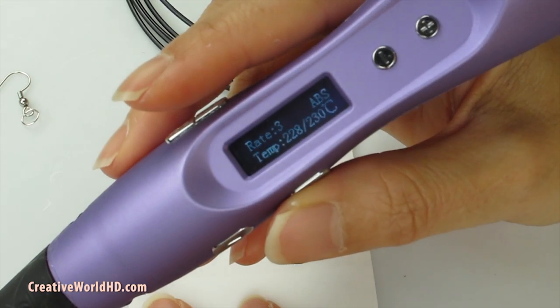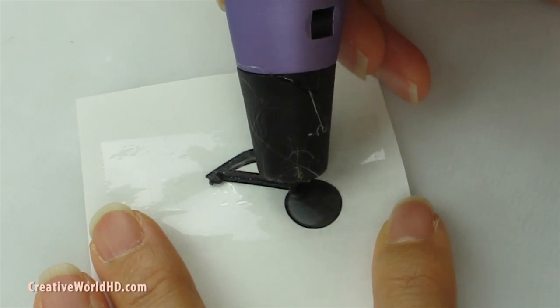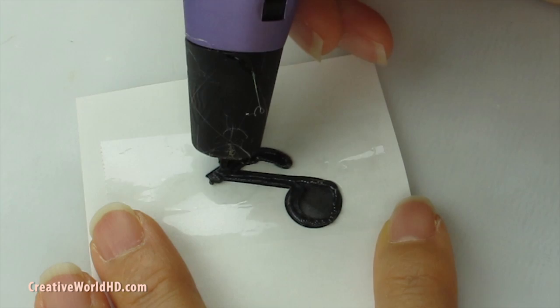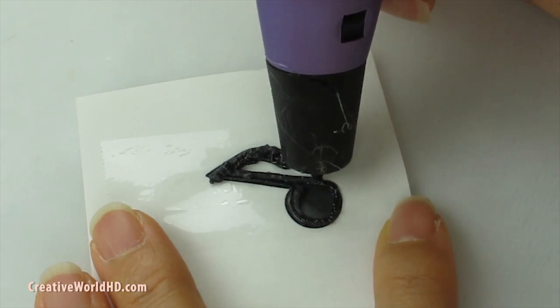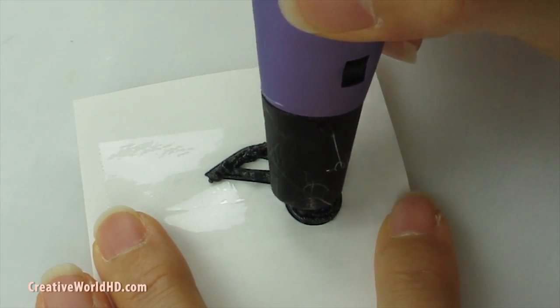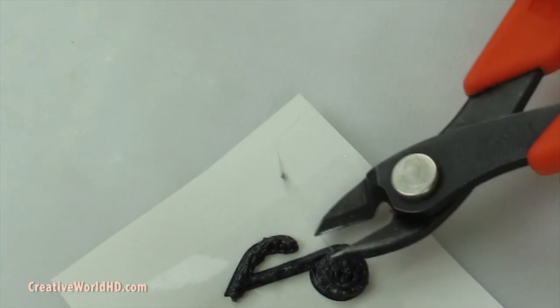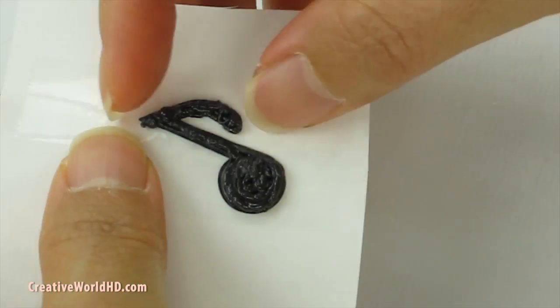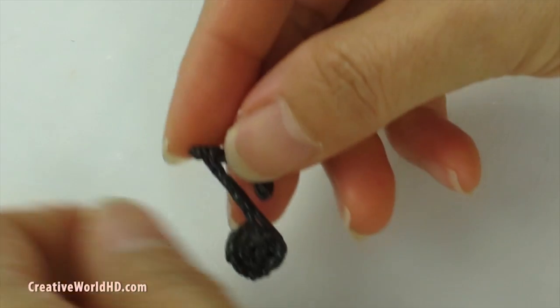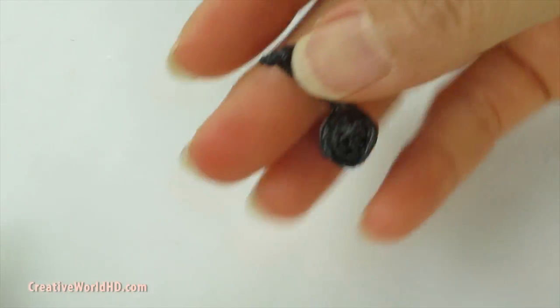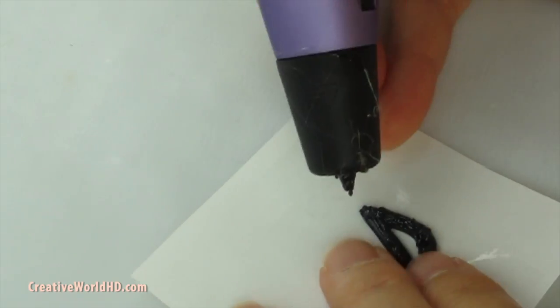Today I am going to set my pen in low speed. Now we have our music note. Now if you want to make it into an earring, you can make a loop right here.